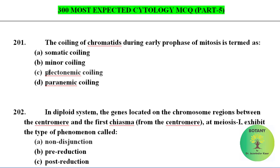Without wasting time, let's start. The coiling of chromatids during early prophase of mitosis is termed as Plectonemic coiling.